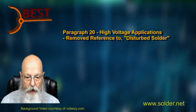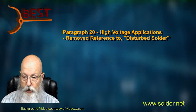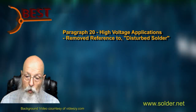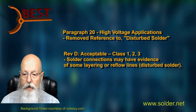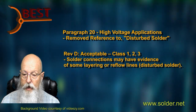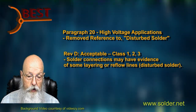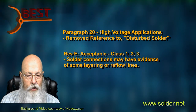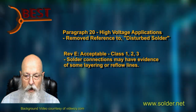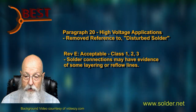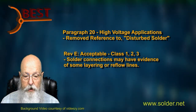Section 20, High Voltage Applications, has seen one criteria change — more of a correction than a change. The acceptable condition previously indicated that layering or reflow lines were the same as disturbed solder and were allowed. The clarification corrects that disturbed solder is always a defect, regardless of whether the high voltage criteria are in use or not.